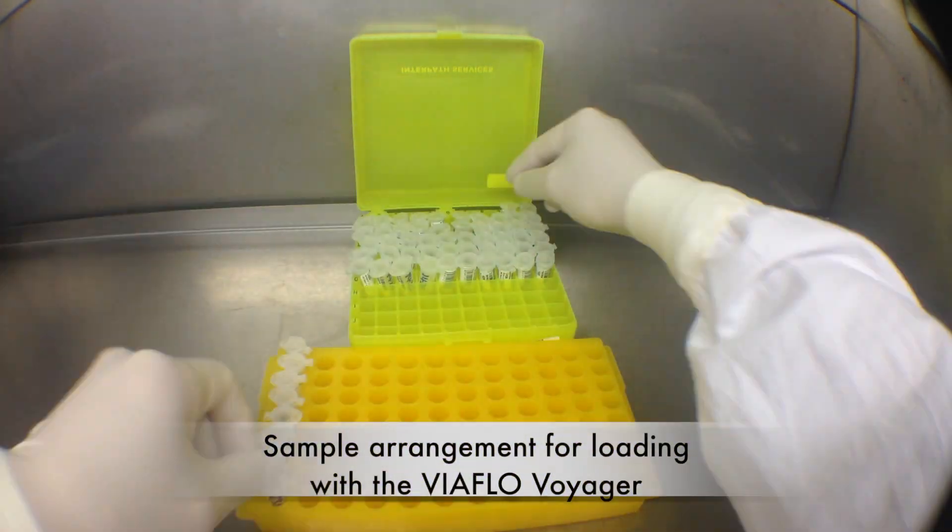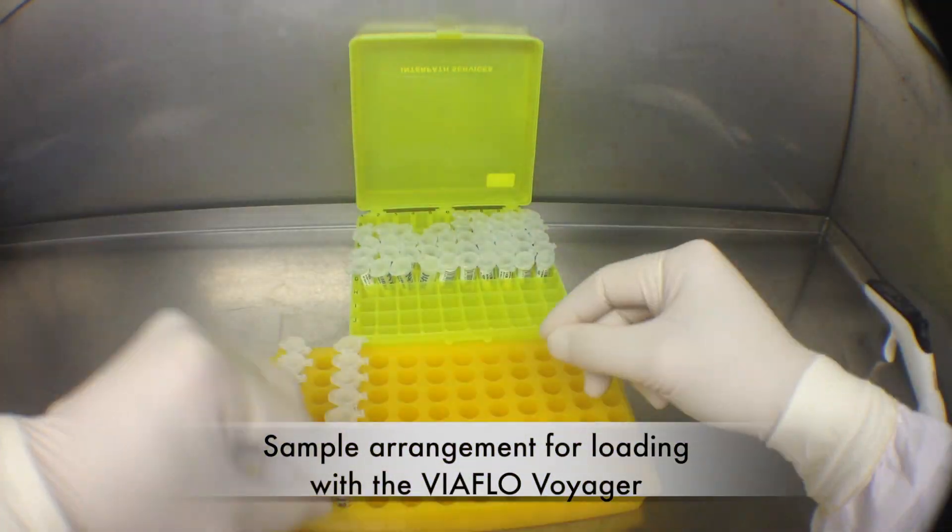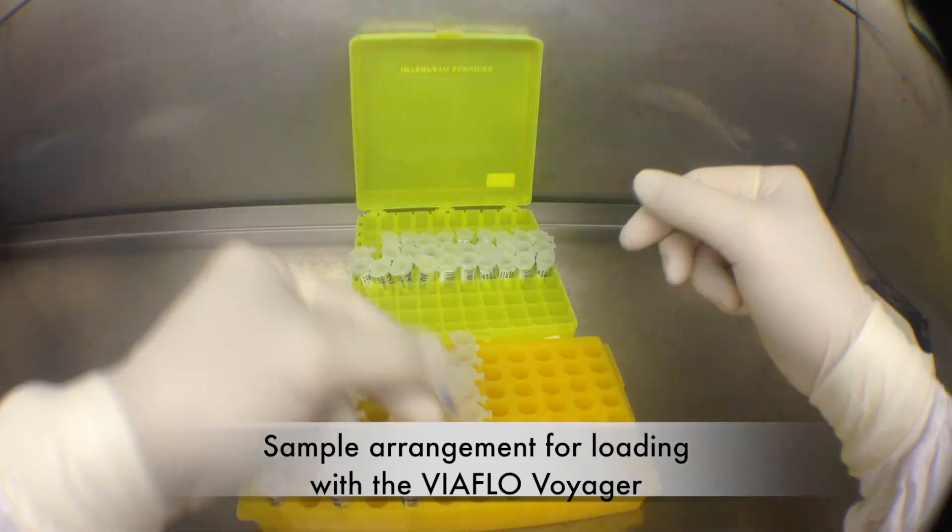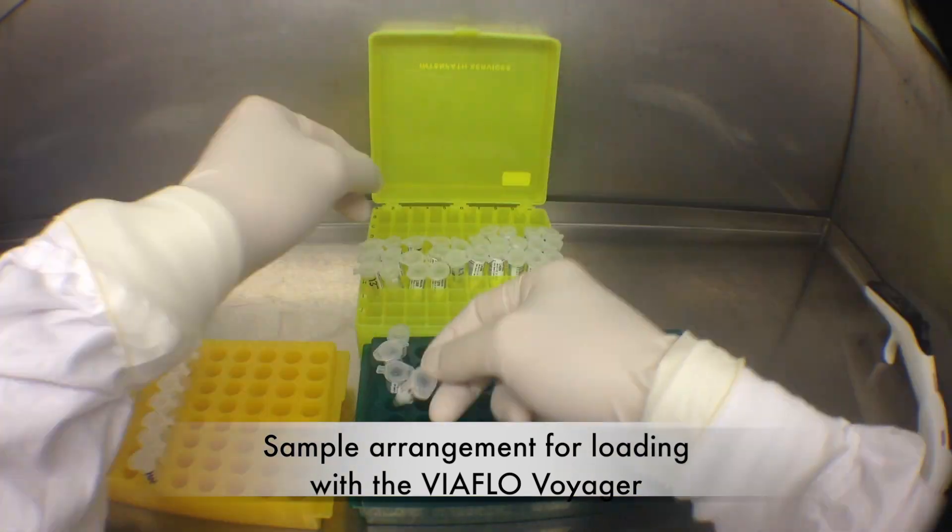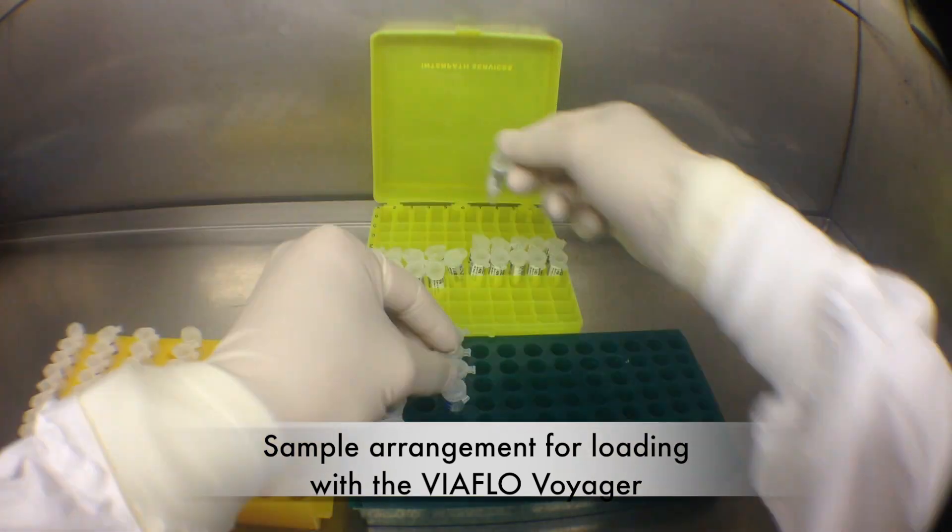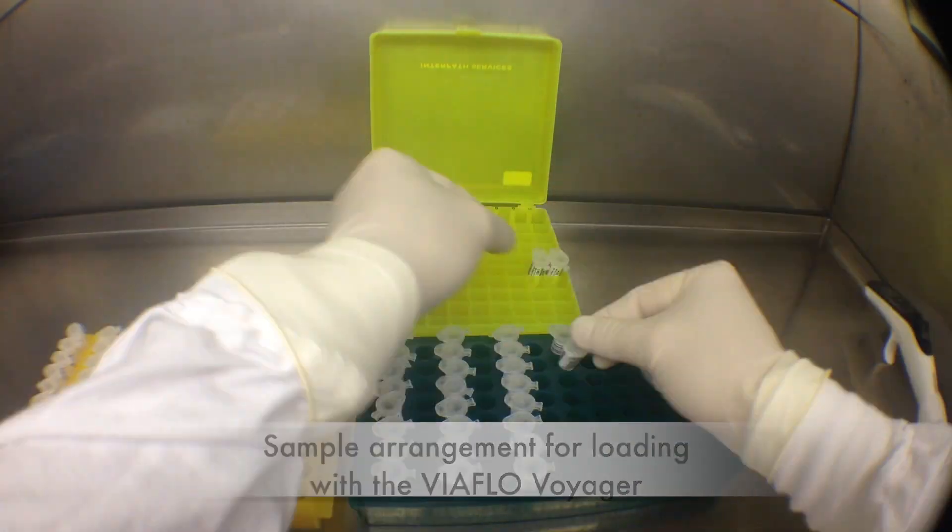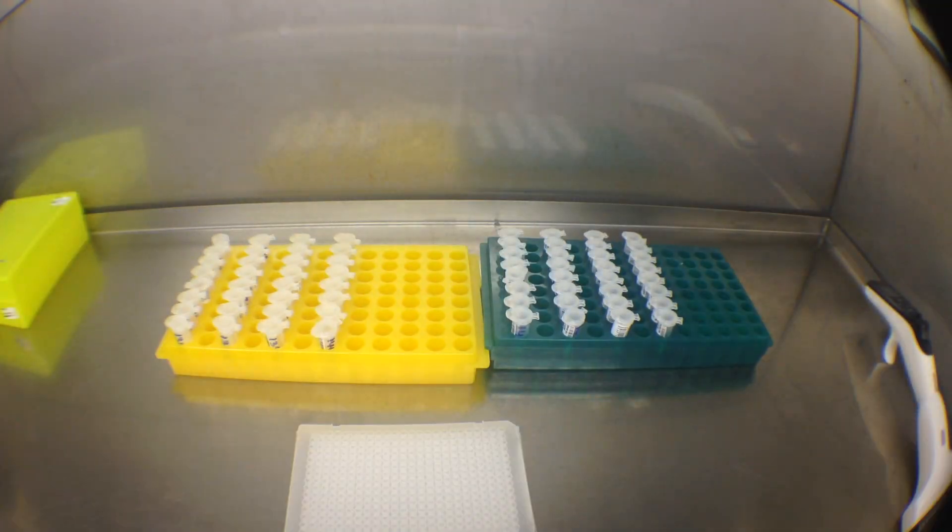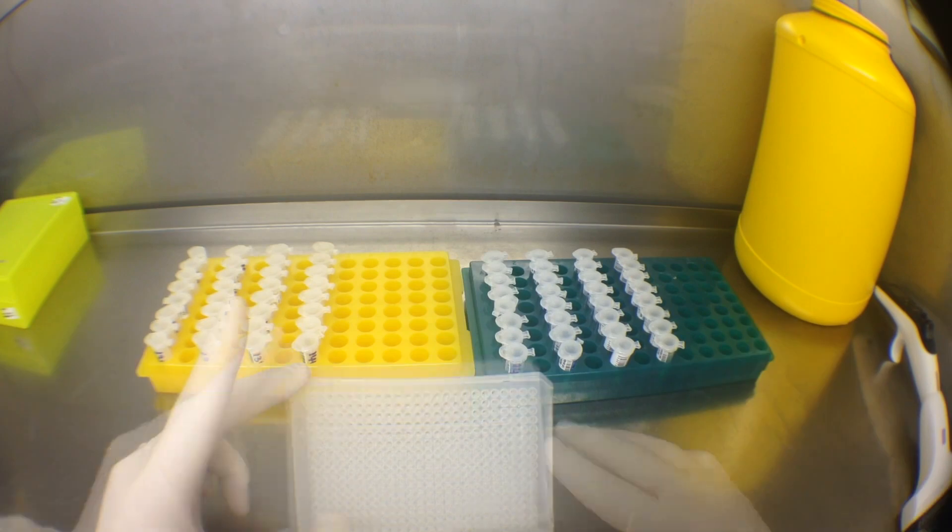Next I need to get my 64 samples all lined up in Eppendorf tube racks ready for the VioFlow Voyager. This is a pipette that has adjustable tip spacing. I'll be able to pick up samples from these tubes and then drop them off into the 384-well plate.